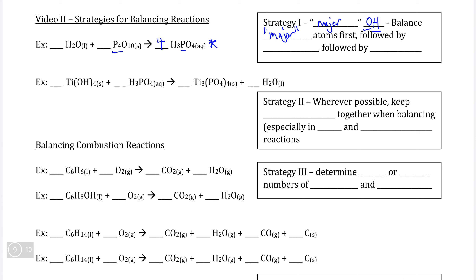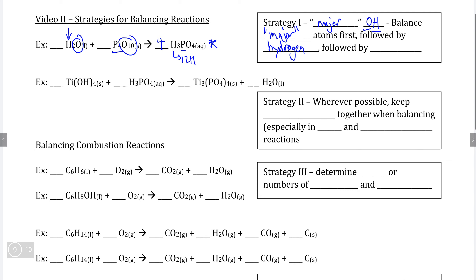Next, we can look at whether to balance hydrogen or oxygen first. I would recommend hydrogen because, unlike oxygen — which appears in a compound in the reactants and in water in the reactants — hydrogen can only be found in one location. Because hydrogen is found in only one compound here, we can see that our products contain 12 hydrogen atoms, meaning we can add a balancing coefficient of six to water, giving us 12 hydrogens in the reactants.